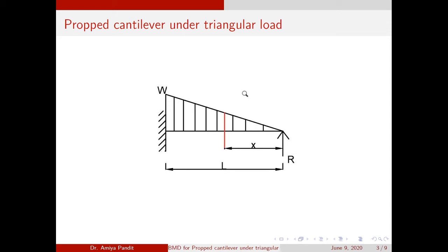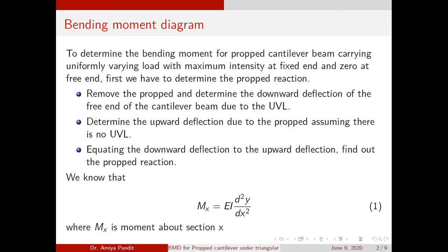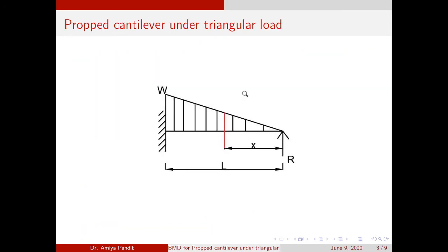This is the diagram of the propped cantilever beam with span length L. The intensity load is W and R is the propped reaction. x is the distance where I am going to calculate the moment, which I will then implement in equation 1. To calculate the moment about section x, I first need to find the ordinate — the red line you can see — I need to find the ordinate of that line.